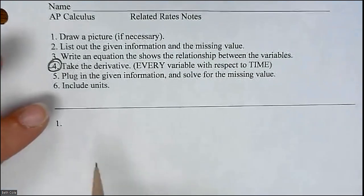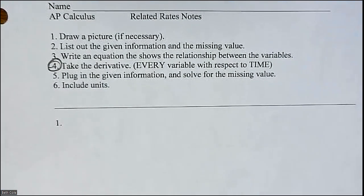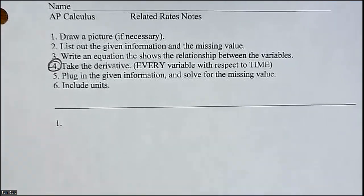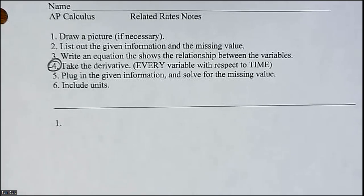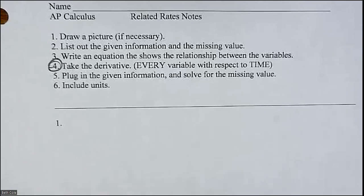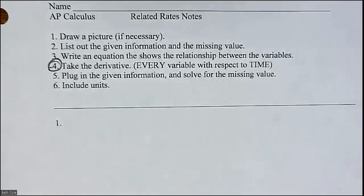That's the crucial thing. Then you plug in. Once you get through that, you plug in what you've got, solve for what you're missing, and put units at the end. If something is just a distance, that would be feet. If it is an area, that would be feet squared, and a volume is feet cubed. That can be a huge clue as to what's going on in the problem.